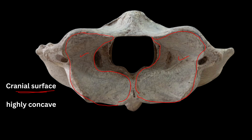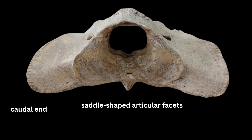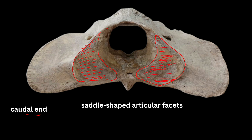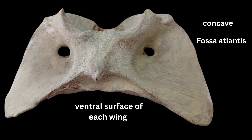At the caudal end you will find saddle-shaped articular facets. These two saddle-shaped articular facets articulate with the axis. The fovea dentis is also visible here, for articulating with the dens or odontoid process of the axis.